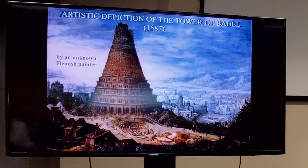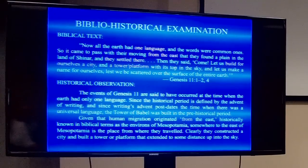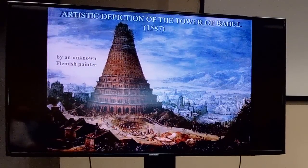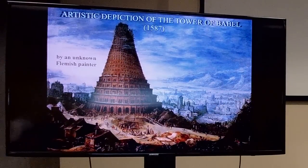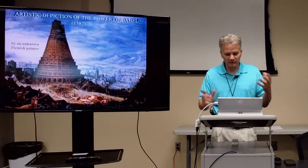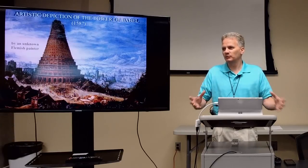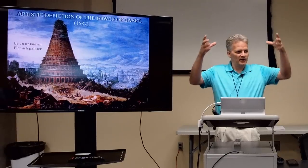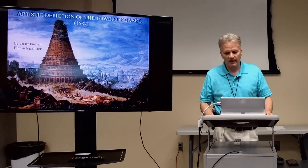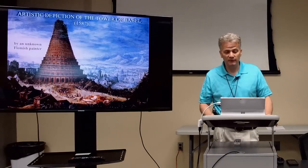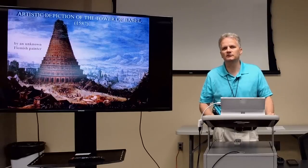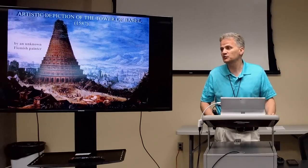This is a painting by an unknown Flemish painter of the 16th century, and it gives you a window into his world — much more so, probably, than the world of ancient Babylon. In his world, buildings, especially taller buildings, were built in a circular fashion, so they conceived of the Tower of Babel as a series of circles going up and up. Reality, of course, is going to prove to be very different because the world of ancient Babel is very different than the world of the Flemish painter of the 16th century.